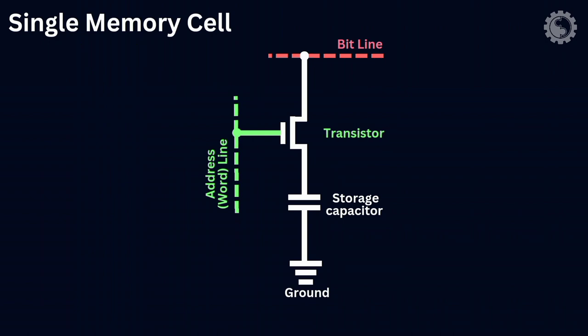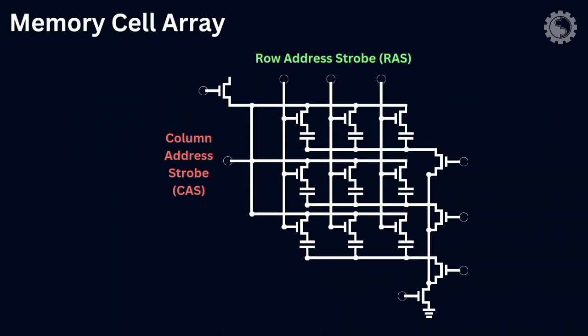The readout from the cell must be restored to complete the operation. These single cells are arranged to form the memory cell array structure. In this cell array, the cells are arranged in rows with bit lines and columns with word lines.